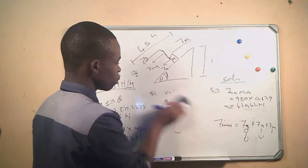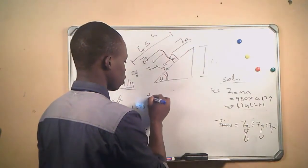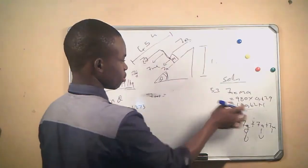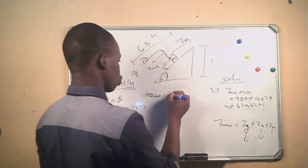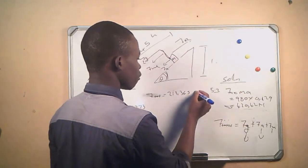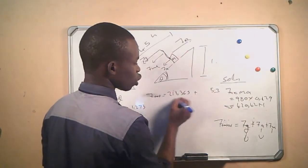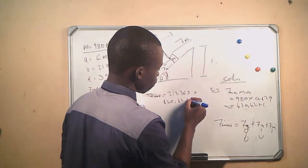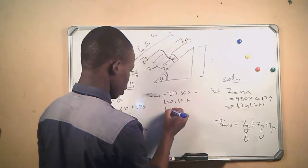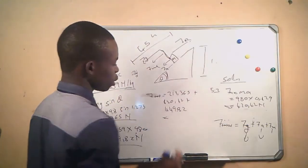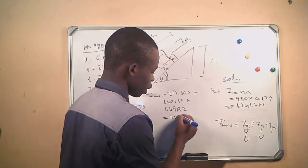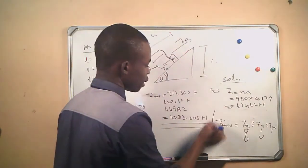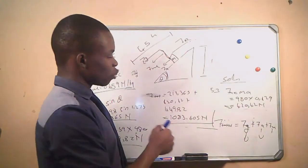To get the total force: F_total = Fg + Fa + F_friction = 213.365 + 420.42 + 449.82, which gives us 1083.605 newtons. That is our total force — the force you need to apply to the vehicle to accelerate it from 6 meters per second to 21 meters per second in 35 seconds.